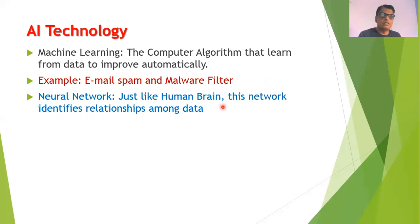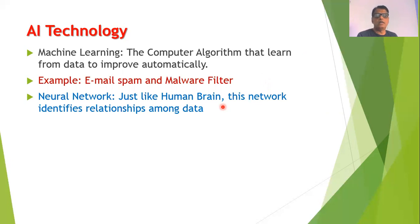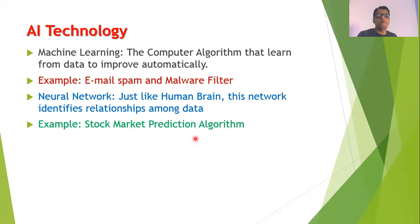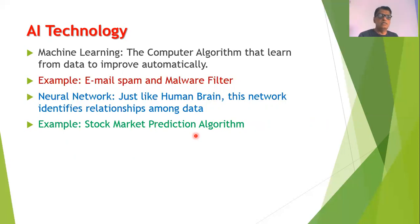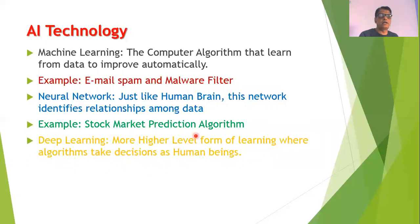Neural network is another technology. A neural network is just like the human brain — the human brain is a collection of neurons, and artificially it is possible to construct such a network. This network can be used to identify relationships among data. For example, if somebody writes an algorithm for stock market prediction, that can be an example where neural network technology is used.